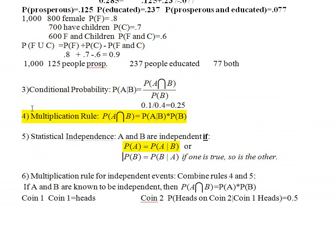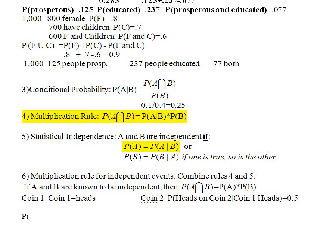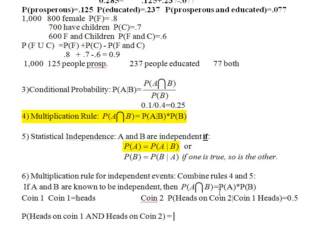Since we know that's true, we can calculate an intersection using this rule. Heads on coin one are known to be independent of what happens on coin two. The probability of getting a heads on coin one and a heads on coin two: since we know those two things are independent, we just take the probability of heads on coin one — 0.5 — and multiply that times the probability of heads on coin two — 0.5. That equals 0.5 squared, which is 0.25. So we have a one out of four chance, a 25% chance, of flipping a coin twice and getting heads both times.